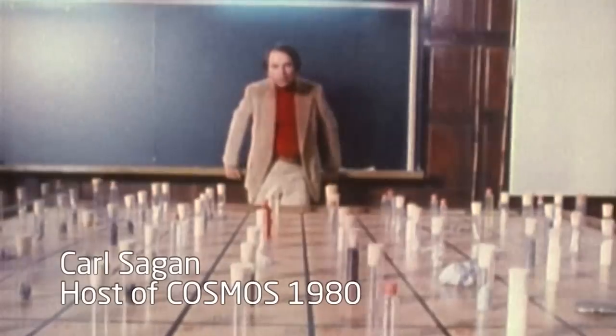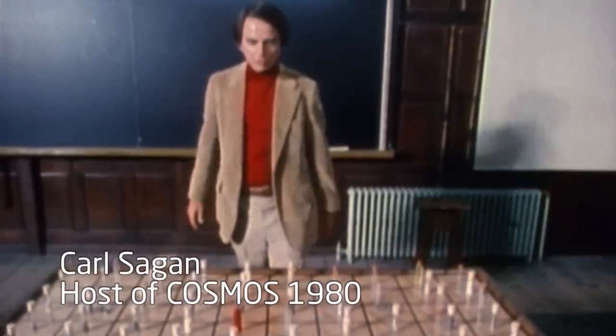There are some 92 chemically distinct kinds of atoms naturally found on Earth. They're called the elements. Here we've represented all 92 of them.